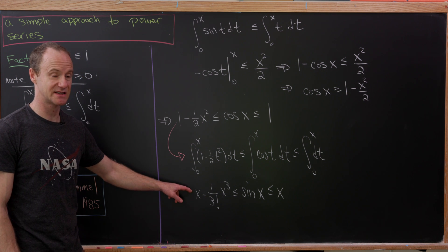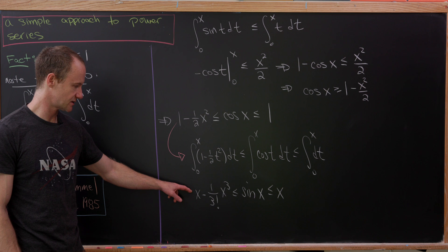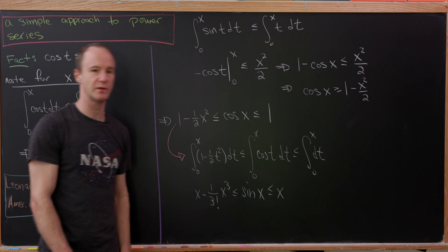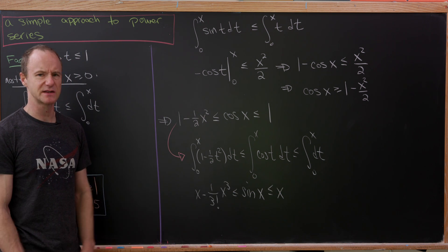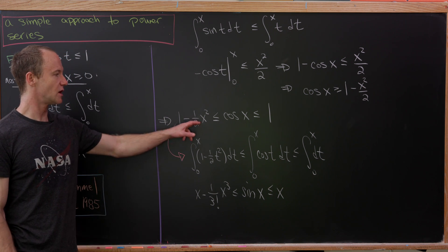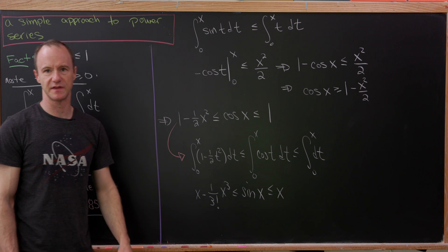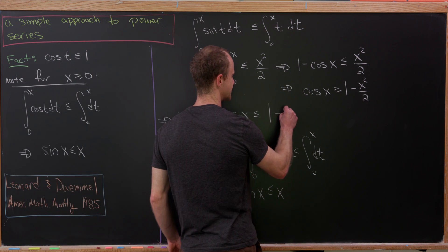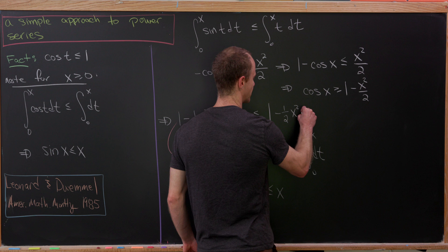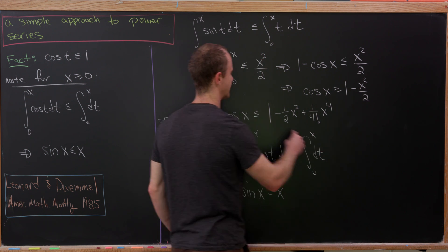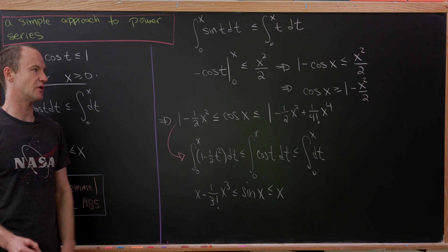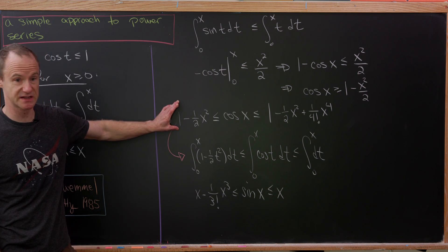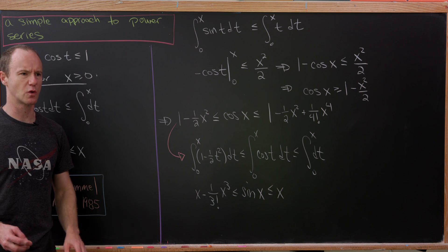For sine we have an ascending alternating sum of odd powers of x with factorial coefficients, and it ends with an exponent two larger than the previous, ending on a minus sign. For cosine, it also ends on a minus sign, with an exponent two less. A couple more steps would show we can also pin cosine above by including a term like x to the fourth over four factorial. This sets up a general statement we can prove by induction.